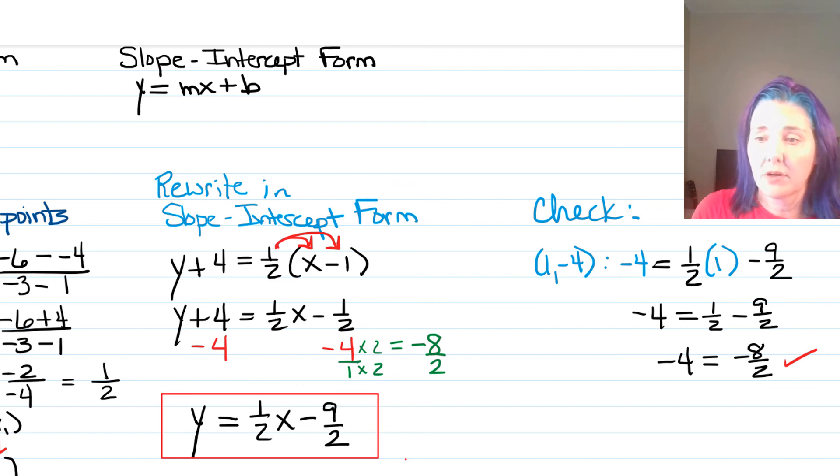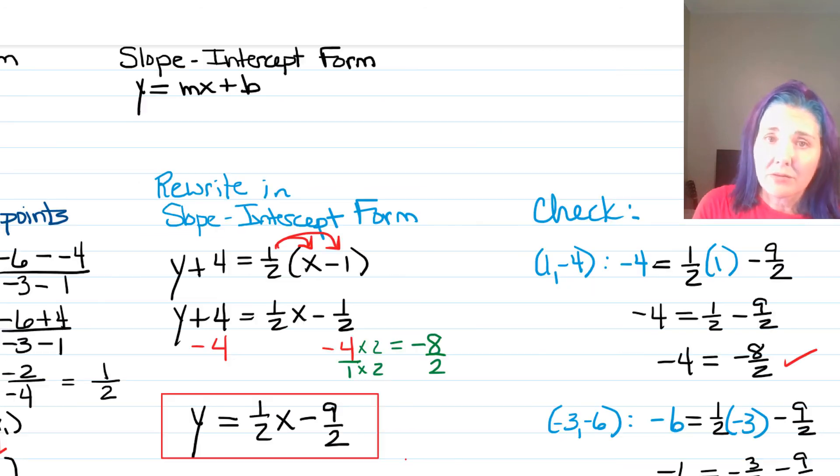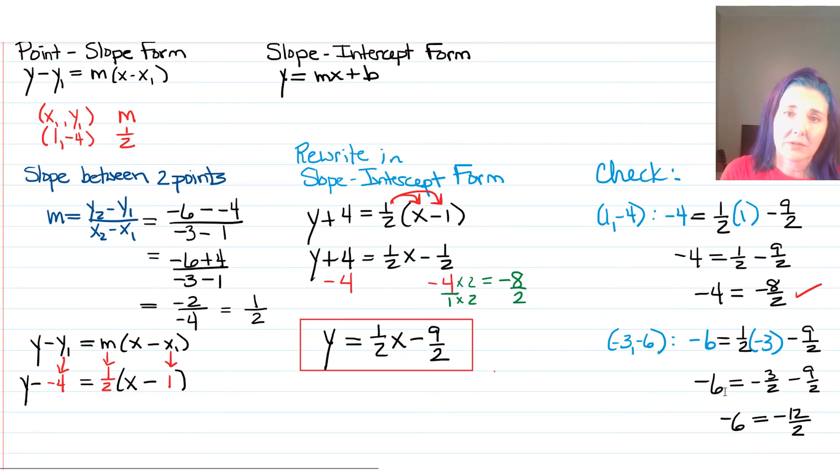Now, it's still possible our answer's wrong, unless we check that that second point also makes the equation true. Plugging in (-3, -6), we see that we get -6 = -12/2, which is equal to -6. So, that one worked as well. So, I'm absolutely certain that this is the correct equation.